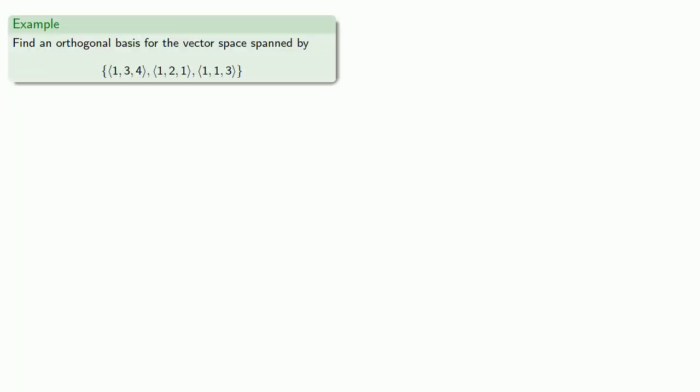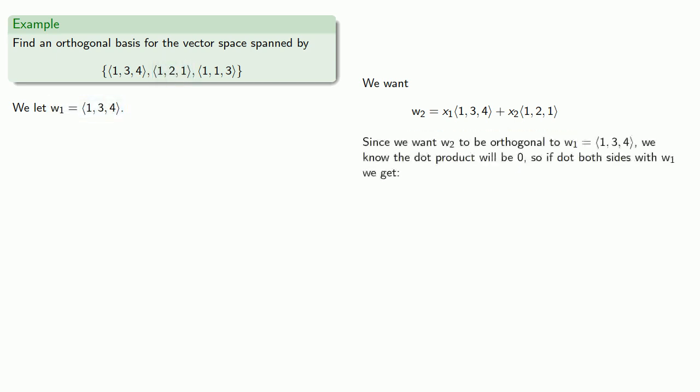So again, we let w1 be our first vector, and we want that second orthogonal vector to be a linear combination of our first orthogonal vector and the vector we're replacing from the original set. Since we want w2 to be orthogonal to w1, we know the dot product will be zero, so if we dot both sides with w1, we get... And we can find the dot products, which gives us the equation... And we can find one solution: